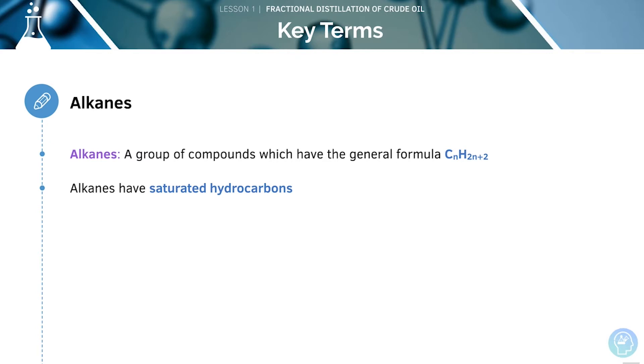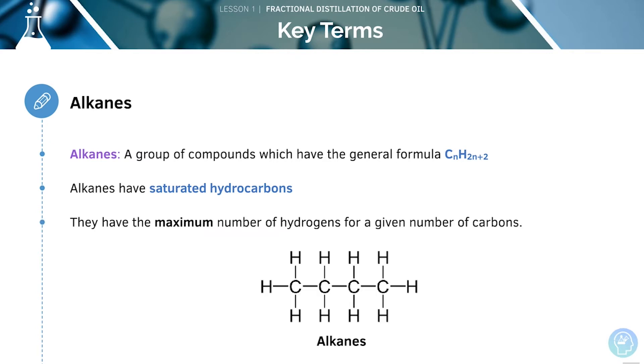Alkanes have saturated hydrocarbons because they have the maximum number of hydrogens for a given number of carbons.